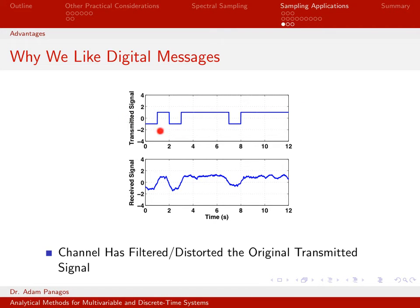Here's an example of a digital signal. This is a continuous time signal — it exists for all times t — but it only takes on discrete levels. It can either be this value or this value, and those are the only two values this signal can take on. When there are only two values, you call that a binary signal.